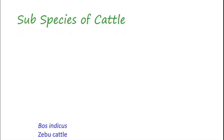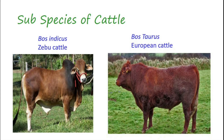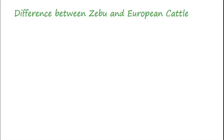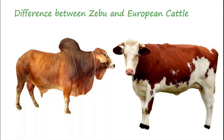Cattle are divided into two groups or subspecies: Bos Indicus, commonly known as Zebu cattle, and Bos Taurus, commonly known as European cattle. The major difference between European and Zebu cattle is the presence or absence of a hump. The hump is comprised of muscles, connective tissues, and fat, and its size and shape in Zebu cattle may vary with breed, age, and gender of the animal.